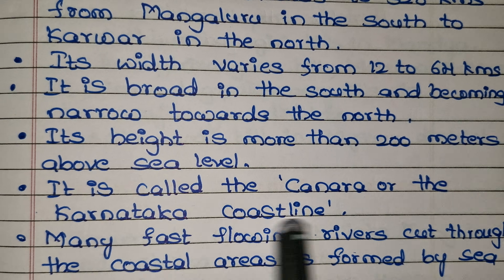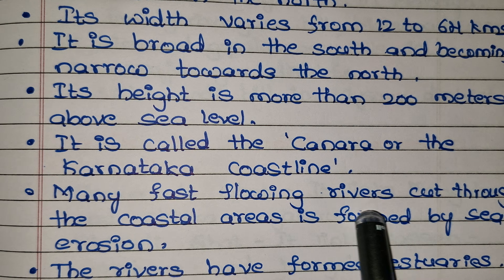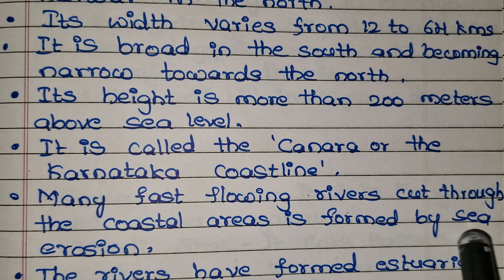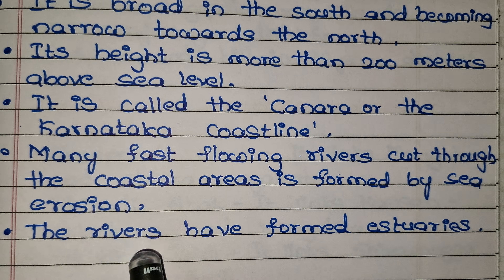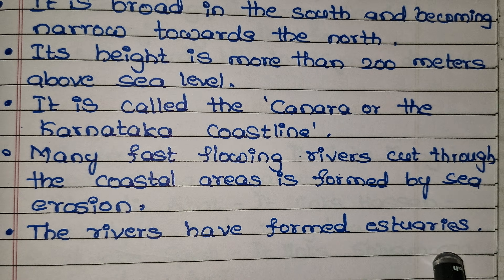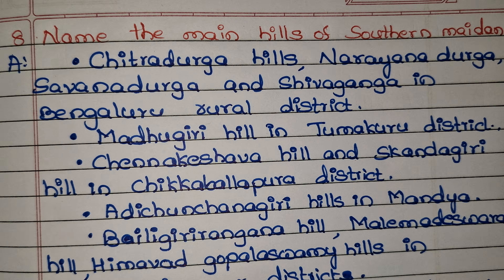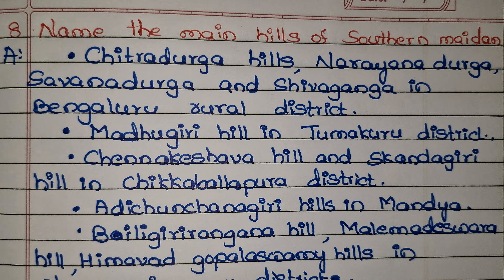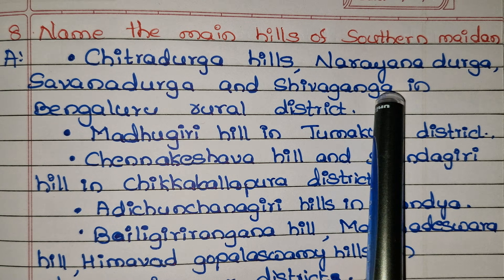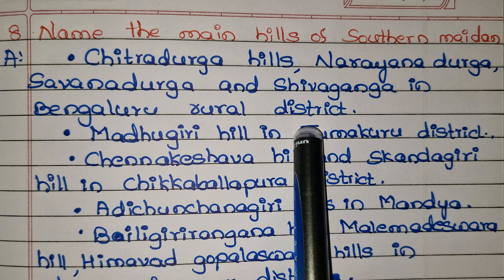The coastal plain is called the Canara or Karnataka coastline. Many fast-flowing rivers cut through the coastal areas, formed by sea erosion, and the rivers have formed estuaries. Name the main hills of the Southern Maidan: Chitradurga Hills, Narayanadurga, Savandurga, and Shivaganga in Bengaluru Rural district.